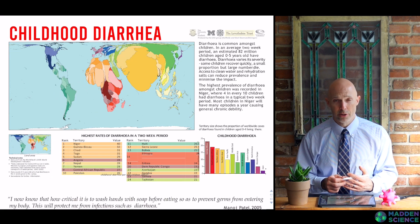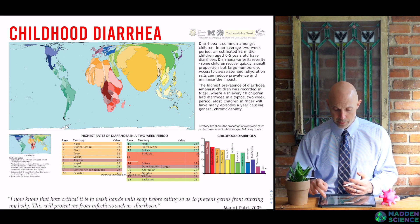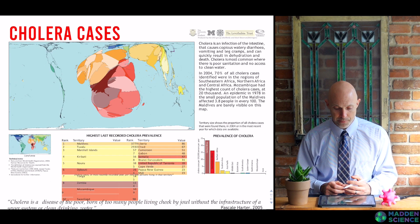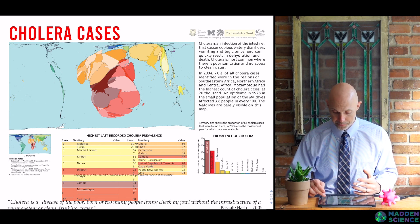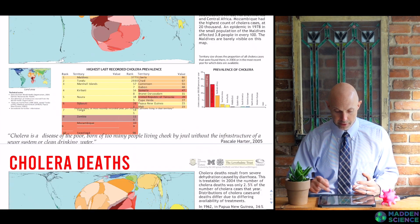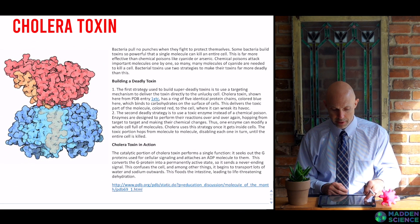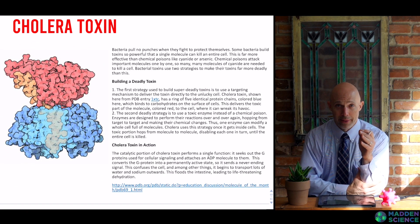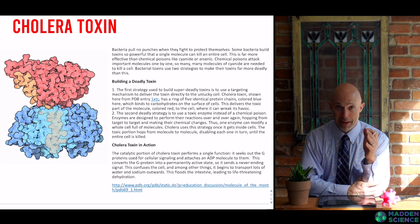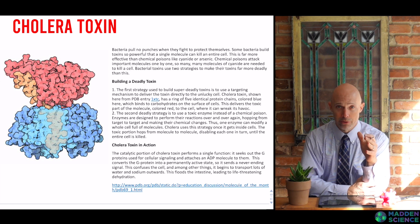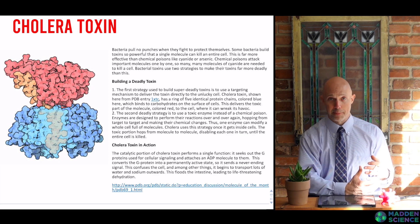Here's generally childhood diarrhea. We can see cholera cases — again, major emphasis within Africa. Here's cholera deaths. I mentioned that Information is Beautiful and The Microbe Scope is my new favorite website. Also the Protein Data Bank — get on it, super fascinating. This is cholera toxin; it talks about how bacteria make their toxins.